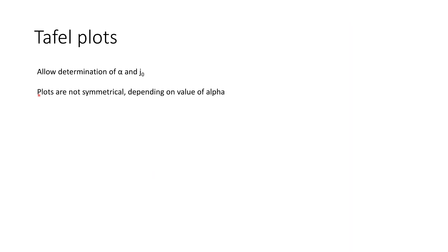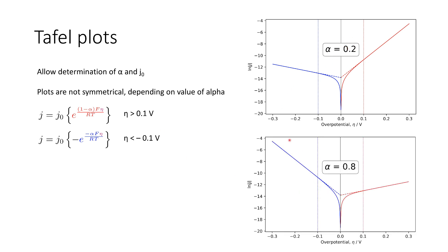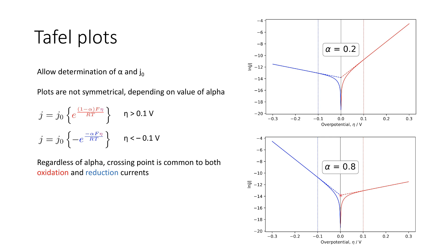It's important to remember that a Tafel plot will not be symmetrical. Depending on the value of our symmetry factor alpha, we will get a different shaped Tafel plot. If alpha is 0.2, we enhance the oxidative component and have a much greater contribution from oxidation, while if the symmetry factor is much greater, we have a much greater contribution from the reductive component. Regardless of the value of alpha, the intercept will be common to both sides of the graph, and both will give us a value for the exchange current density.